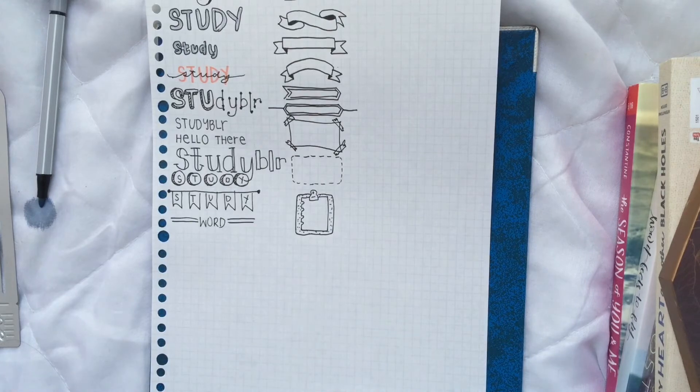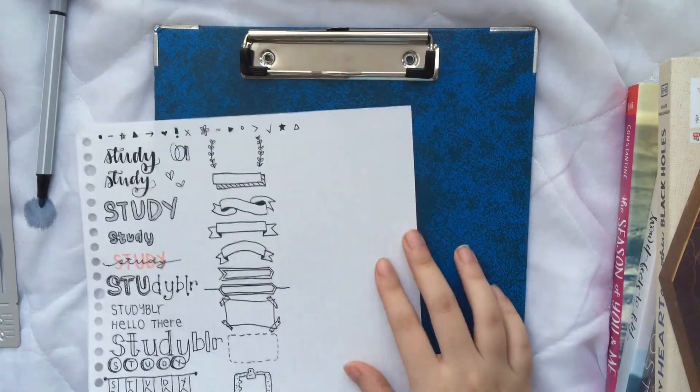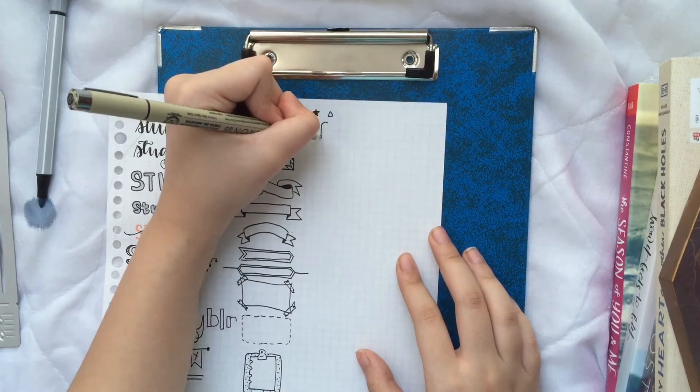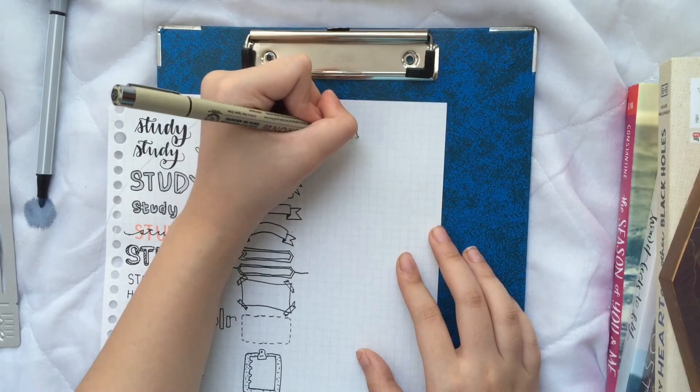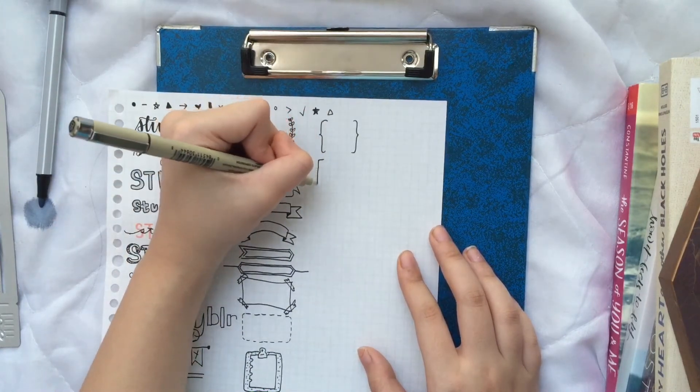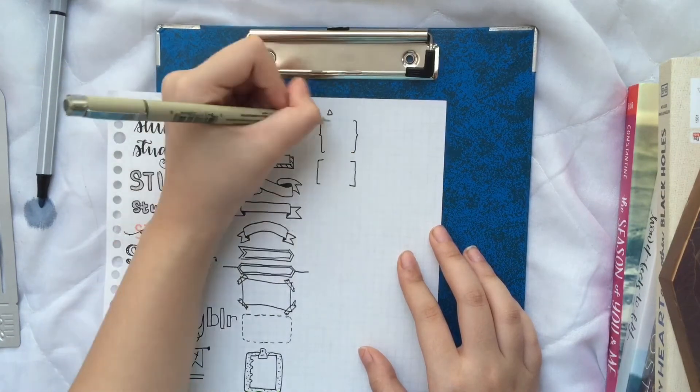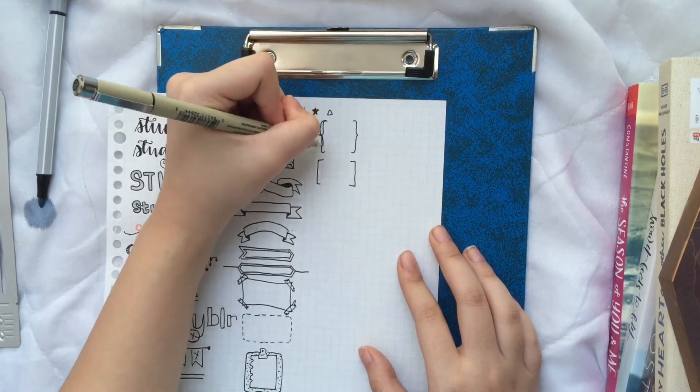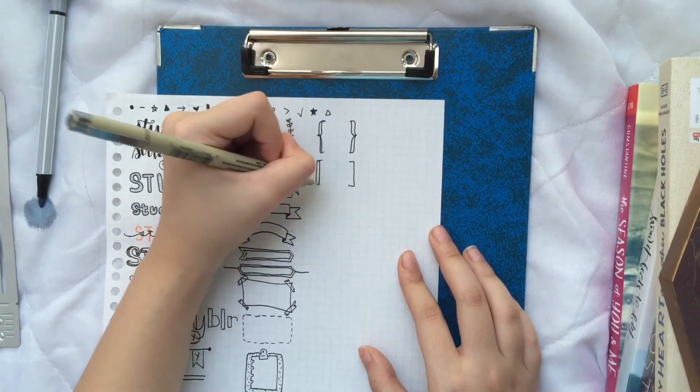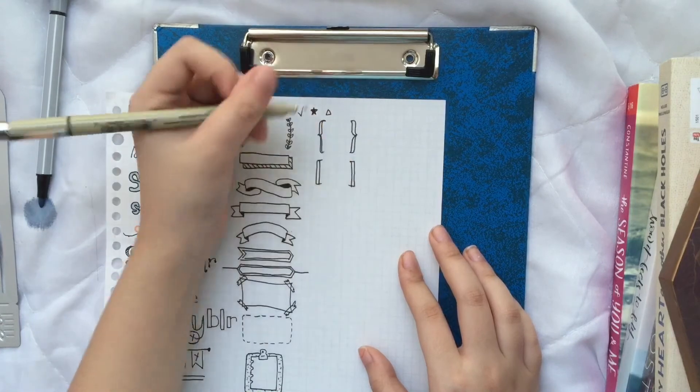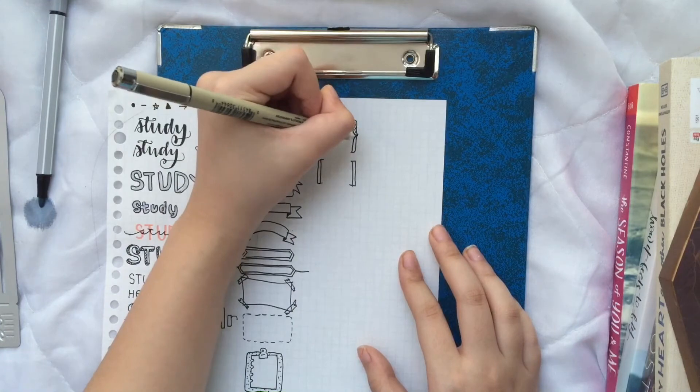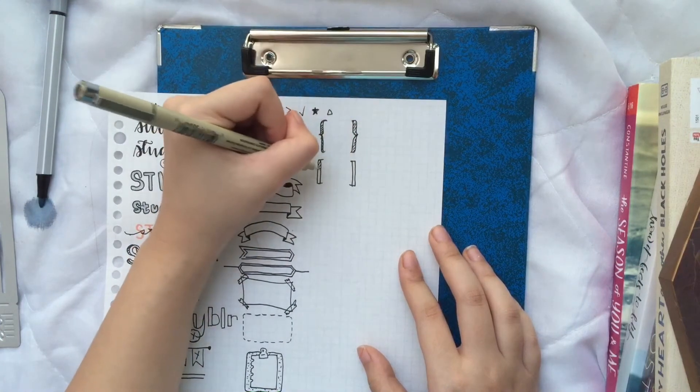And then I also use this bracket and this bracket, and I usually put double, double lines on them. And then do the shadow slash thing again because I just love using them.